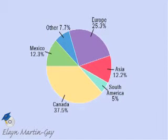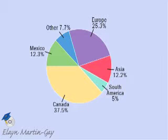Let's study this circle graph. It shows the percent of visitors to the U.S. in 2008 by various regions. By the way, during 2008 there were approximately 50,500,000 foreign visitors.